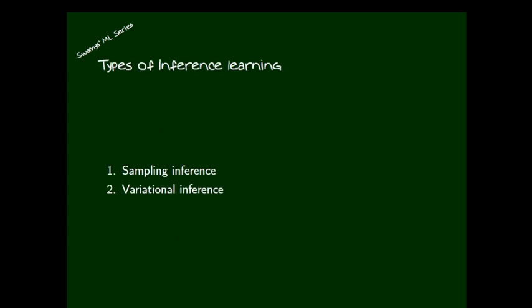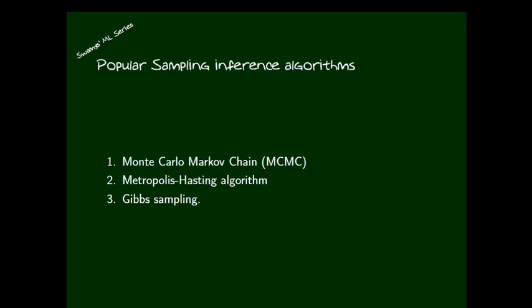When we apply the probabilistic sampling approach, inference learning will happen. The different approaches for inference learning are: one is the sampling inference method, and another is called variational inference. There are three popular sampling inference algorithms: the first is Monte Carlo Markov Chain (MCMC), the second is the Metropolis-Hastings algorithm, and the last is Gibbs sampling. There are many more algorithms, and new ones will be developed — these are simply some popular ones.